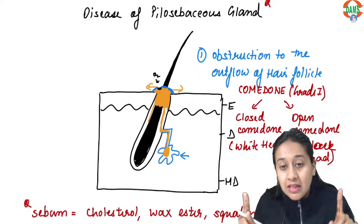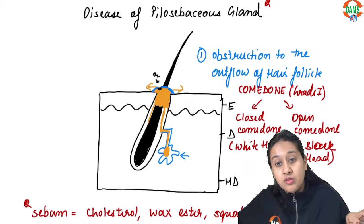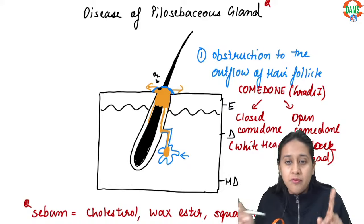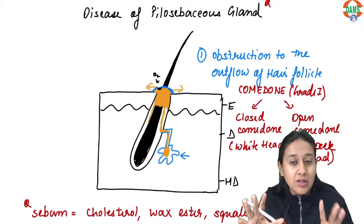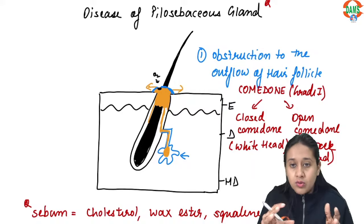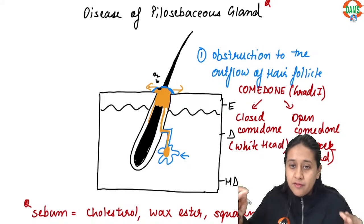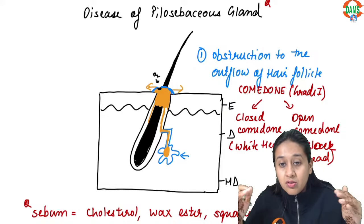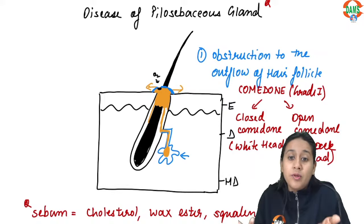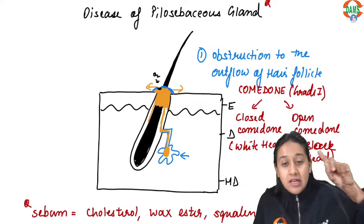Students often ask whether open or closed comedones come first. There is no fixed sequence — acne can start with either type. Both can progress to the next stages. The skin growing over the follicular outflow may result in either open or closed comedones first, and that is not something that needs to be fixed in sequence.